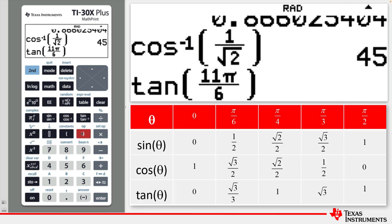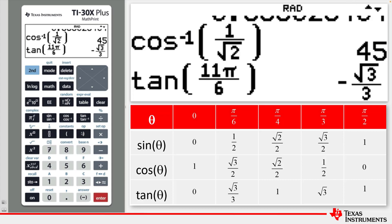And close the bracket and then press Enter. And this says that the tan of 11π on 6 is minus root 3 on 3.